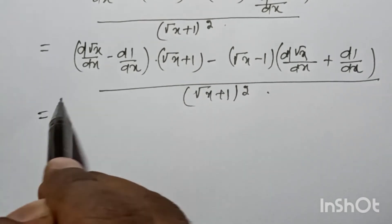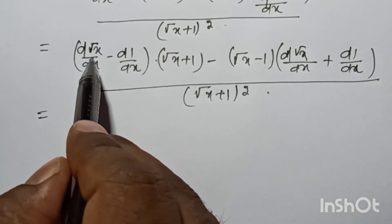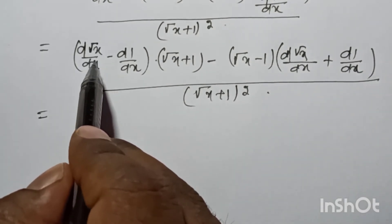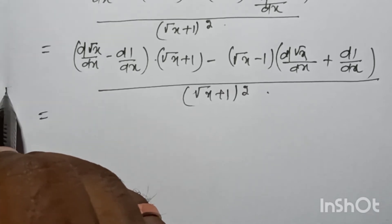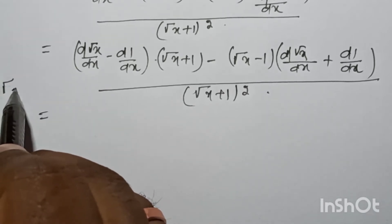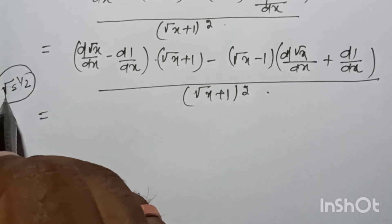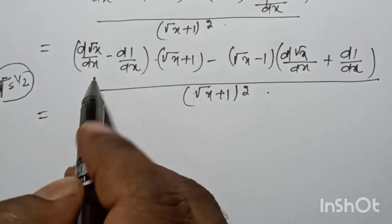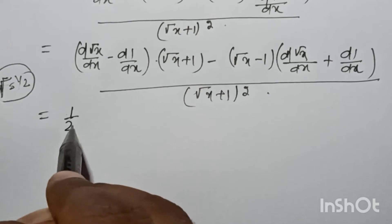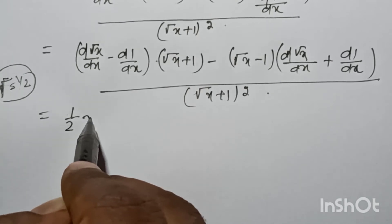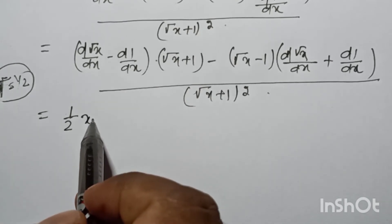The derivative of root x — because root x means x to the power 1 by 2 — so the derivative is 1 by 2 into x to the power 1 by 2 minus 1, that is 1 by 2 into x to the power minus 1 by 2.